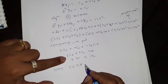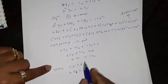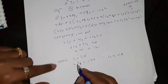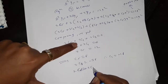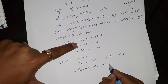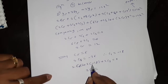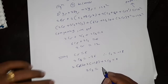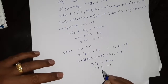Substituting c5 equal to 6 into 6c5 + 2c4 equal to 0: 36 + 2c4 equal to 0, therefore c4 equal to minus 18. Then substituting into 2c5 + 3c4 + 2c3 equal to 0: 12 + 3(−18) + 2c3 equal to 0, giving 12 − 54 + 2c3 equal to 0, so 2c3 equal to 42, therefore c3 equal to 21.